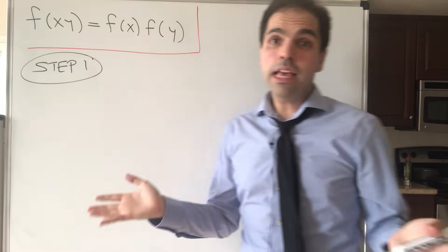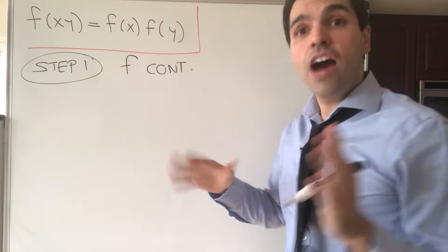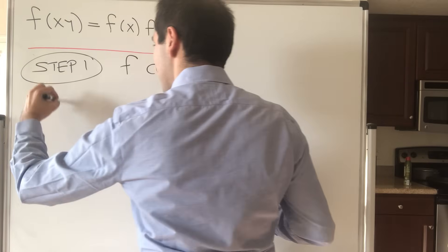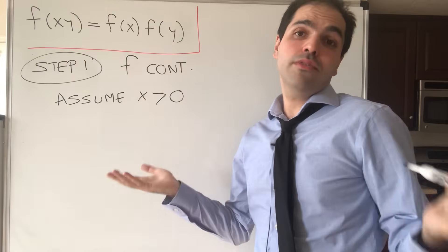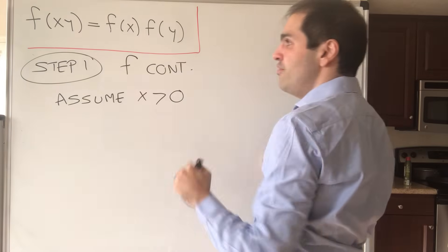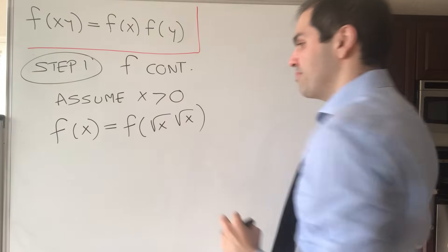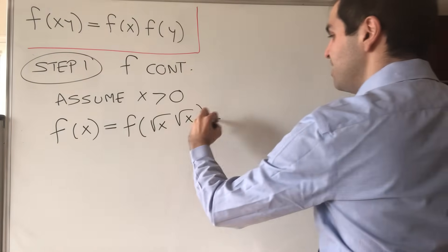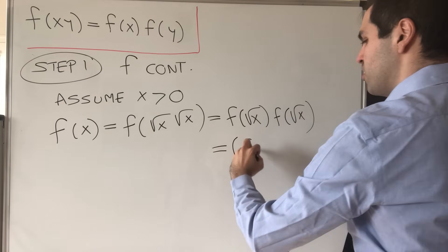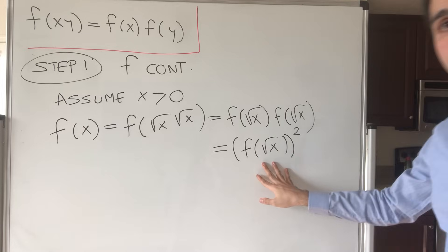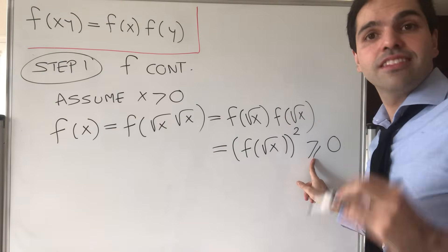Step one: throughout the video we will assume that f is continuous, and for the next couple of steps, assume x is positive. It turns out that if x is positive, f of x must also be positive. Because f of x is the same as f of (√x · √x), and by the functional identity this equals f(√x) times f(√x), which is f(√x) squared. Since it's a square, it must be greater than or equal to zero.